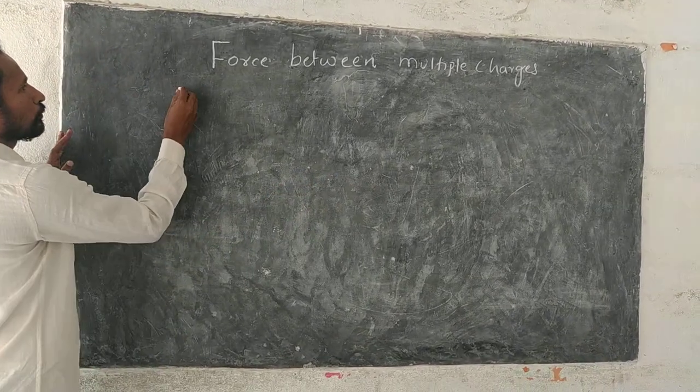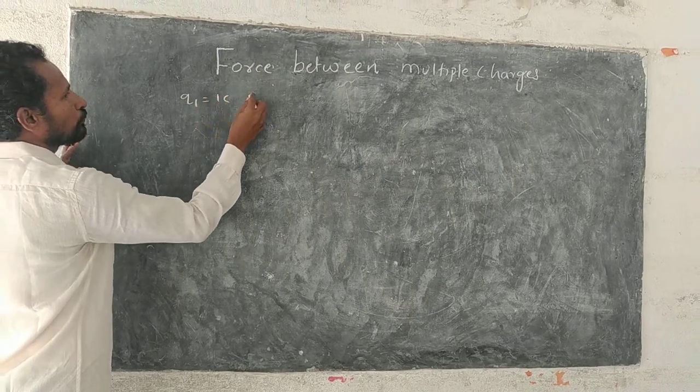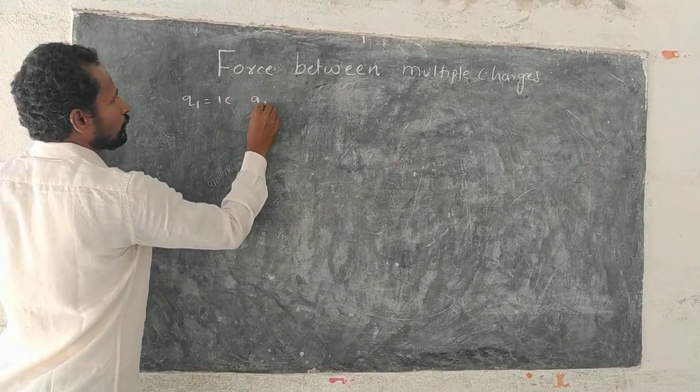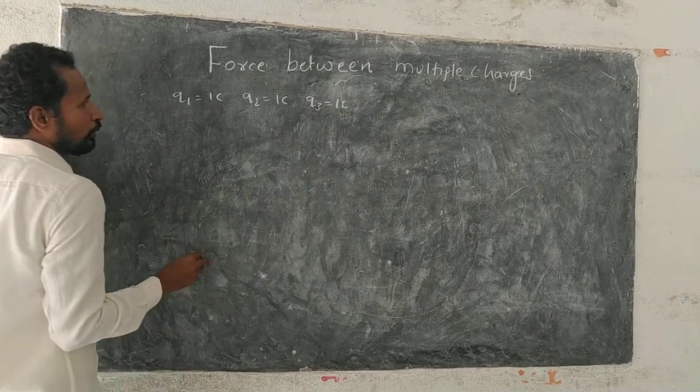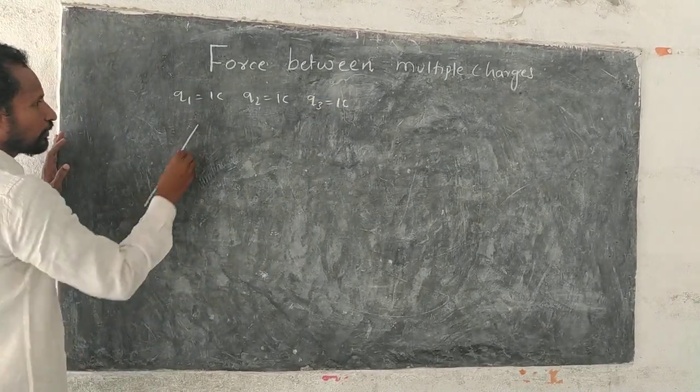We do expect questions like this. Let us suppose Q1 charge 1 coulomb, Q2 charge 1 coulomb, Q3 charge 1 coulomb, placed at corners of an equilateral triangle.